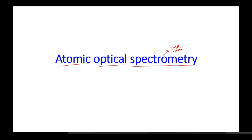Till now we have talked about some spectroscopic methods. The first one was UV visible, second was fluorescence spectroscopy, then we talked about Raman, then luminometry. In fluorescence we have fluorescence plus phosphorescence discussed, and combining those two we have luminometry.